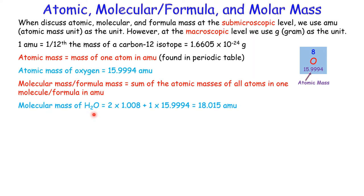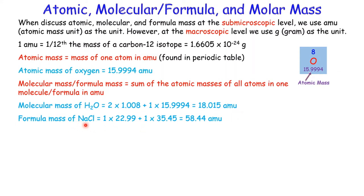Take water as an example: two hydrogens times the atomic mass of hydrogen, plus one oxygen times the atomic mass of oxygen, gives the molecular mass in AMU. For the ionic compound sodium chloride, the formula mass is one sodium atomic mass plus one chlorine atomic mass, totaling 58.44 AMU.